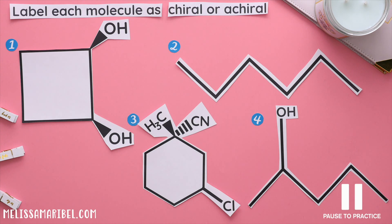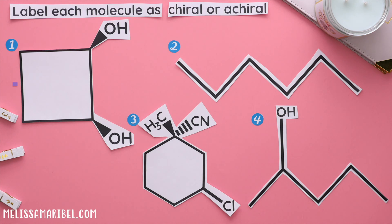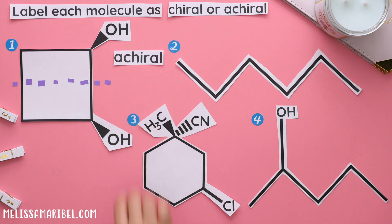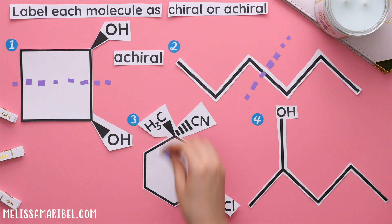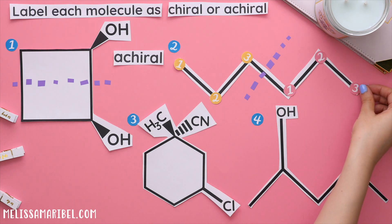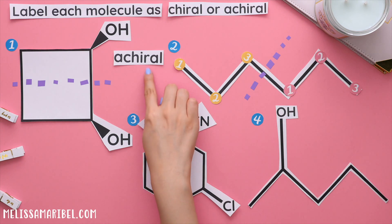For question two, label each molecule as chiral or achiral. To find the answer, remember we are looking for lines of symmetry. If there is a line of symmetry within the molecule, then it's achiral — like this first one is. Here is another hidden line of symmetry. We can count the number of carbons on either side and see that we can cut this molecule in half and it would be the same. Since there are one, two, three carbons on the left and one, two, three carbons on the right, this molecule is achiral.